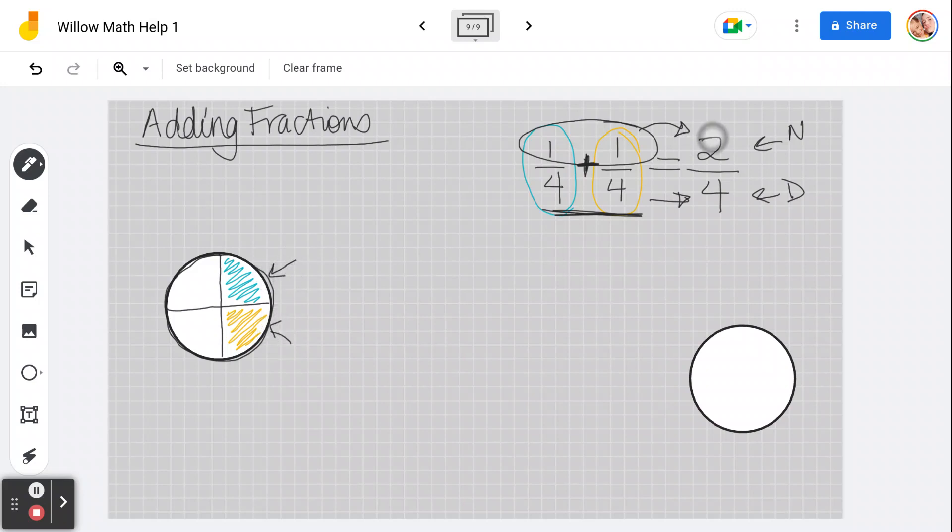So I've eaten two out of four. That's why when we add fractions, we actually only add the numerators. That's the top one, numerators. We do not add the denominators.